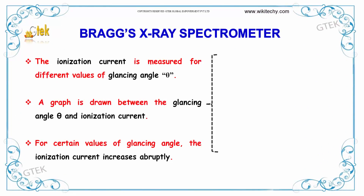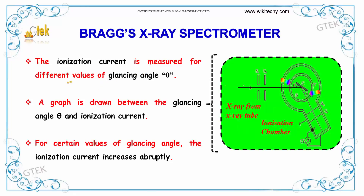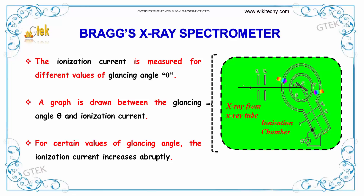The ionization current is measured for different values of glancing angle theta. A graph is drawn between the glancing angle theta and the ionization current. For certain values of the glancing angle, the ionization current increases abruptly.